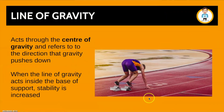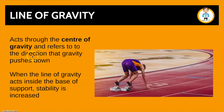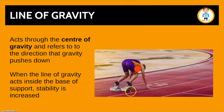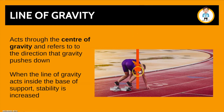Finally, we have the line of gravity. This acts through the centre of gravity and refers to the direction that gravity pushes down. A key point: when the line of gravity acts inside the base of support, stability is increased. In this image, the centre of gravity would be somewhere where that red dot is. The base of support would be a square in between his legs and his hands — quite a large base of support, so he would be quite stable. The line of gravity, which is where gravity is pushing down, would be somewhere around there. This would be a balanced position because the line of gravity is going through the centre of gravity, which is within the base of support.